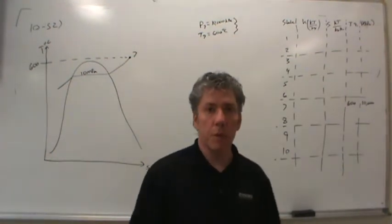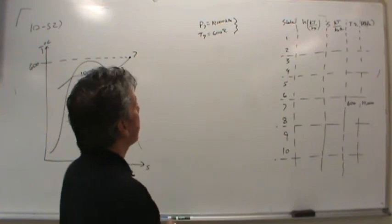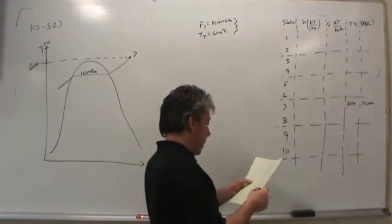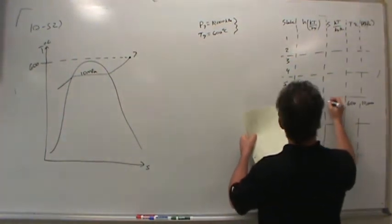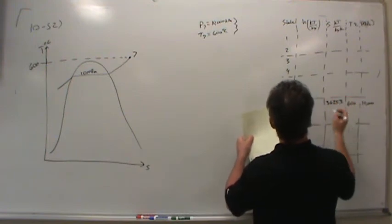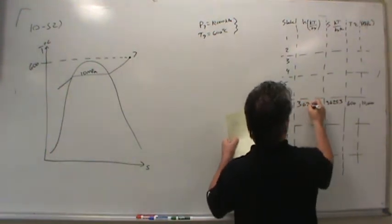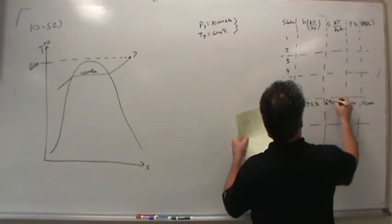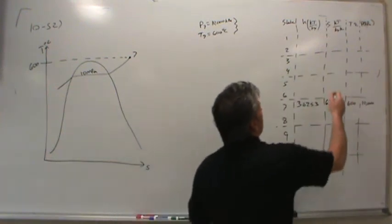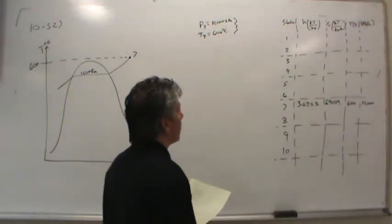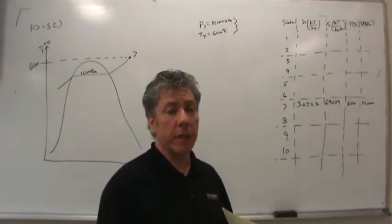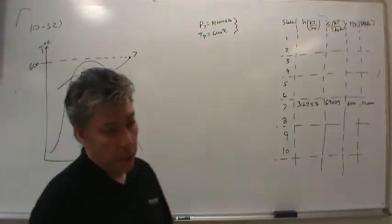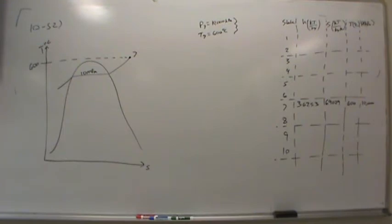These two pieces of information allow us to go into the superheating tables and look up the enthalpy and entropy. The enthalpy at state 7 is 3,625.3 kilojoules per kilogram. The entropy is 6.9029 kilojoules per kilogram per kelvin. There's one state solved — once we have the enthalpies in all the states, we can pretty much answer any question thrown at us.